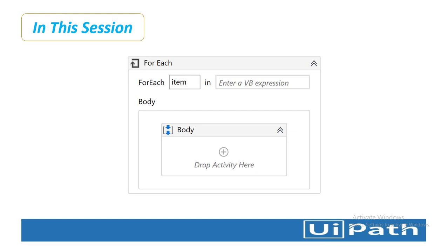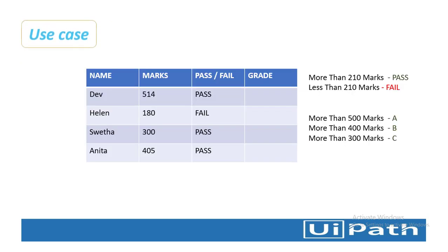In this session we are going to use both if and switch activities along with the for each activity. Let me start with a use case we are going to see in a real-time scenario. Let us assume we are having students — if you see on my screen we are having the name of the students, marks of the students, and pass or fail. Based on the marks, we have to calculate pass or fail and also the grade of the particular student.